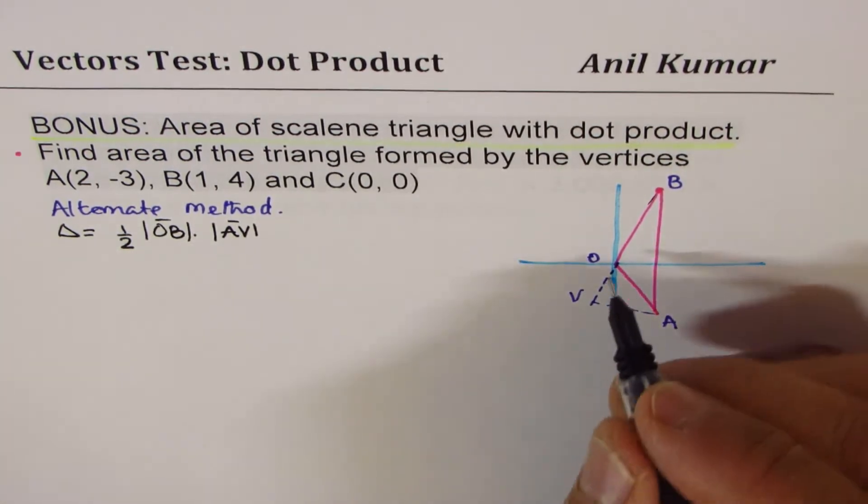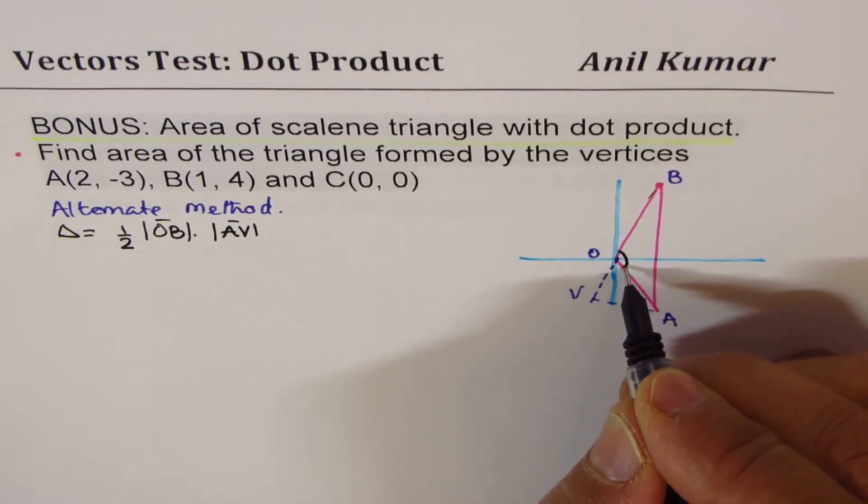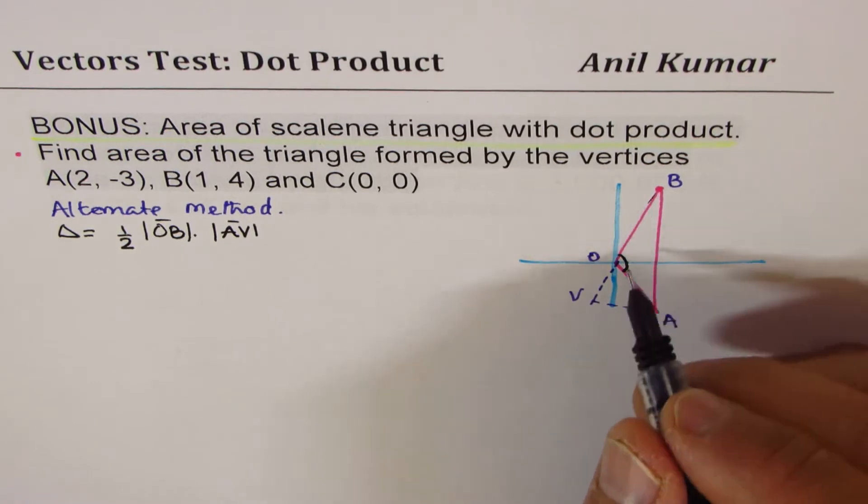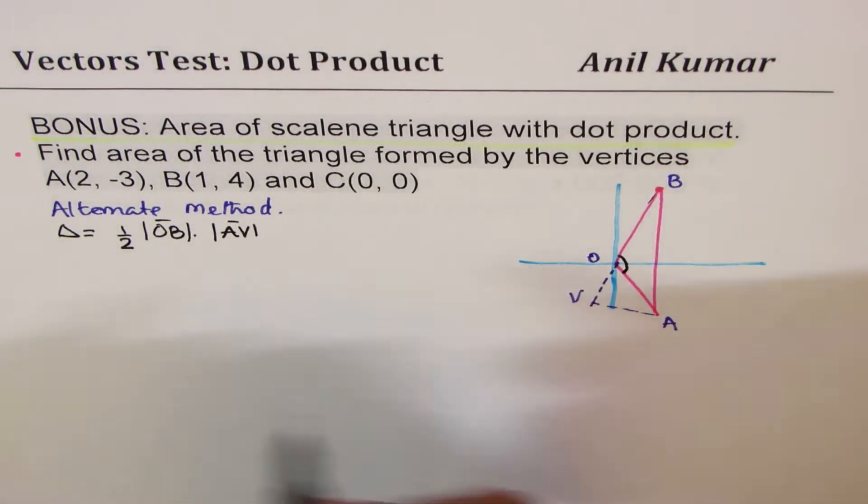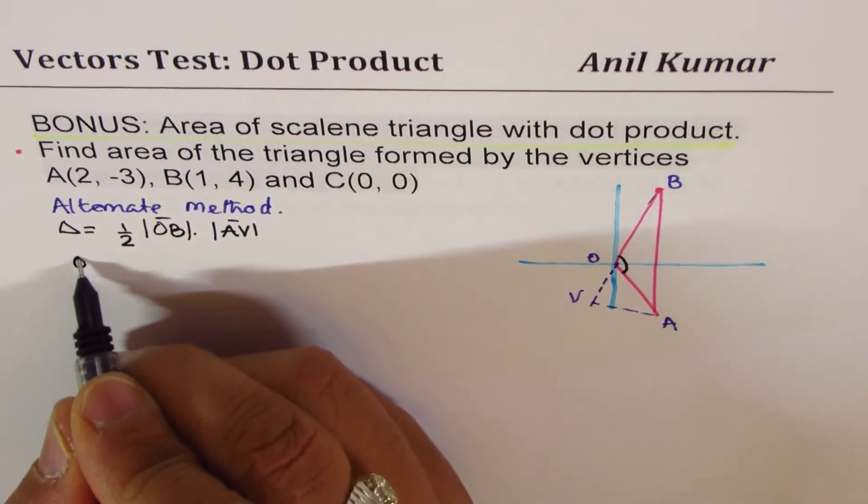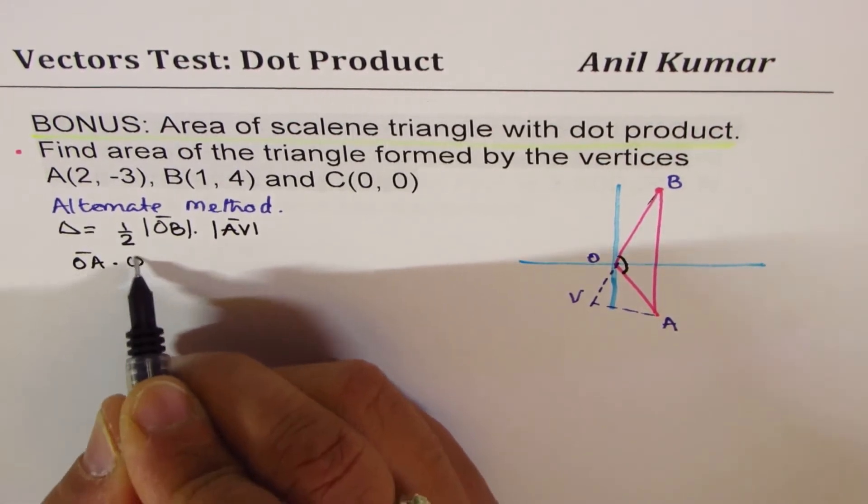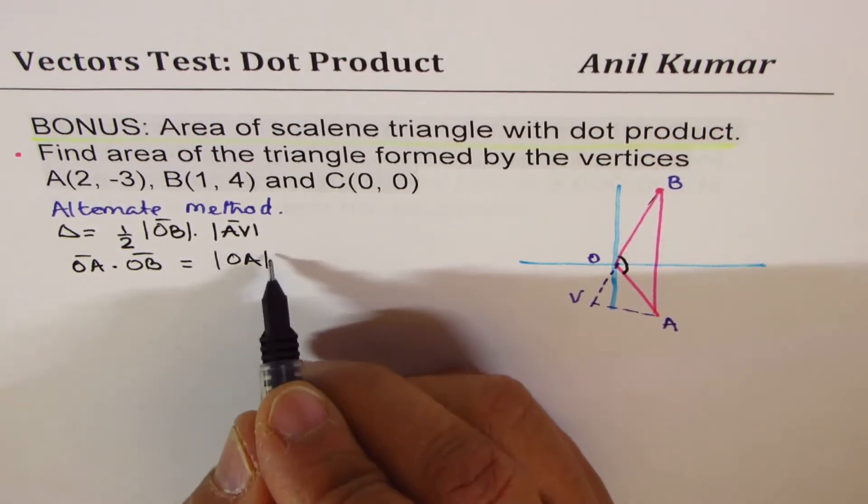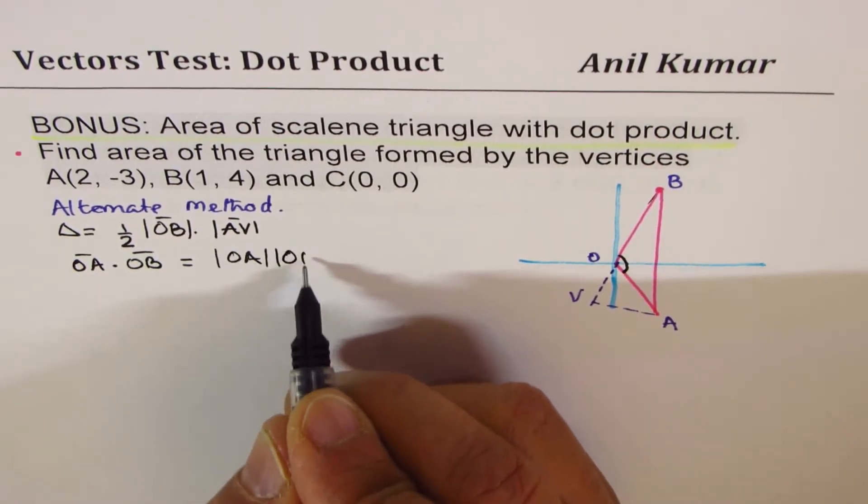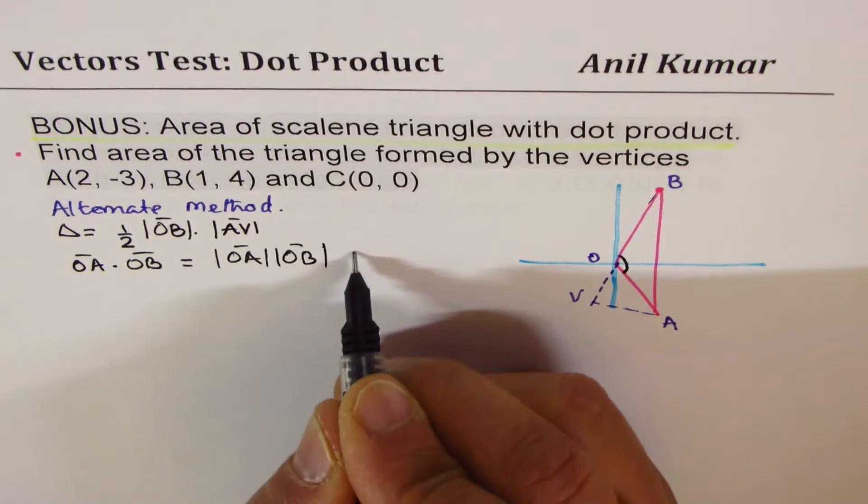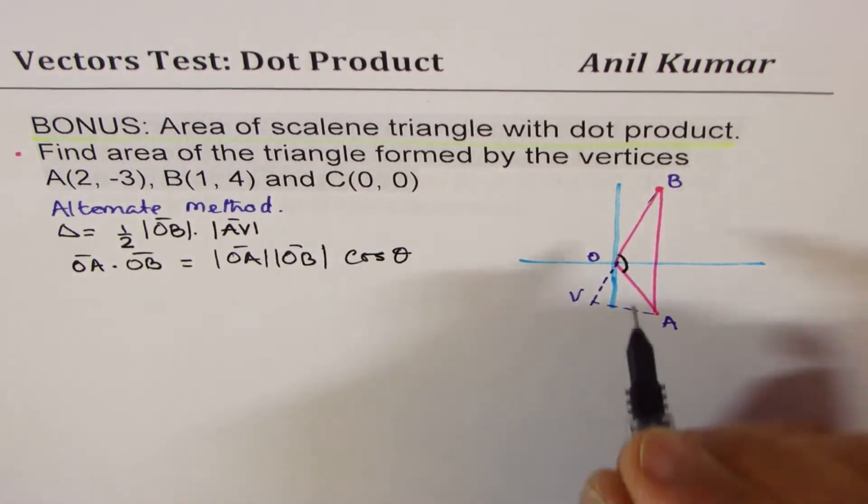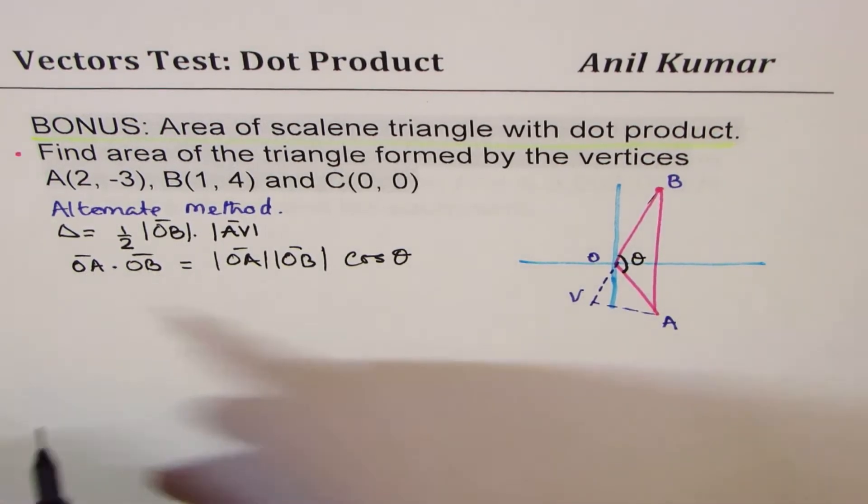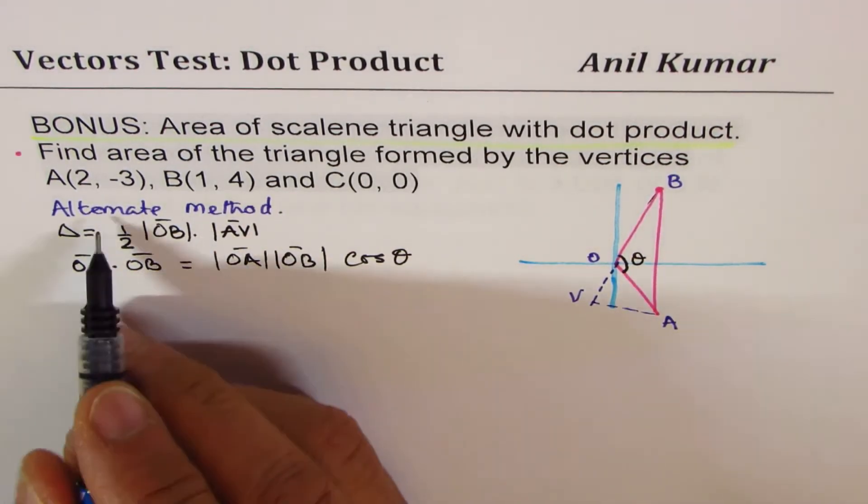Now how do we get AV? Since we know the position vectors OA and OB, we could actually use OA dot OB. This is magnitude of OA times magnitude of OB times cos θ, where angle θ is between them.